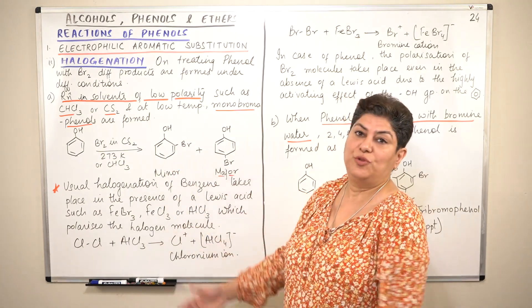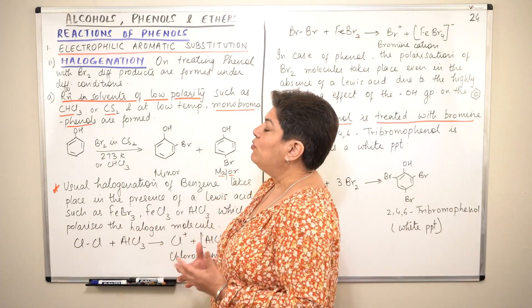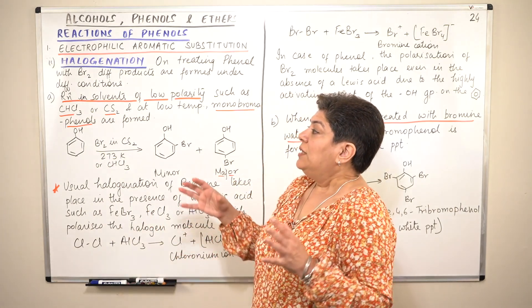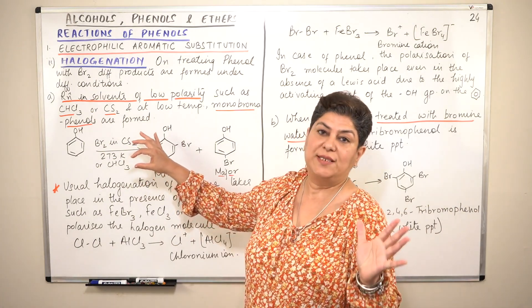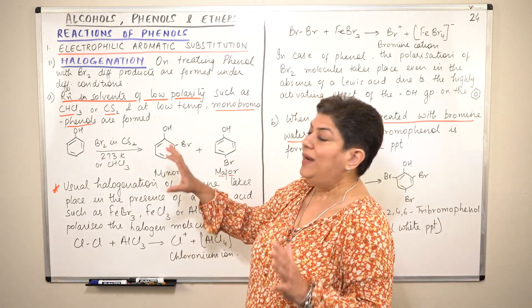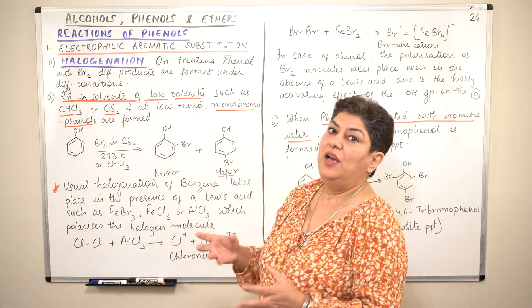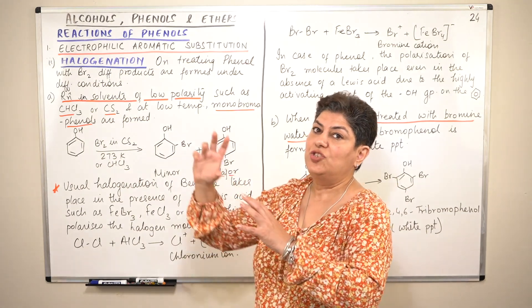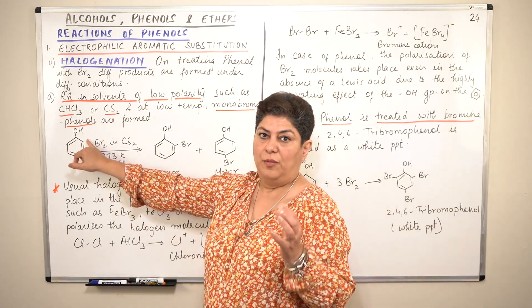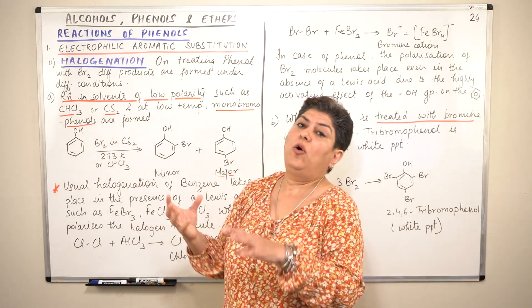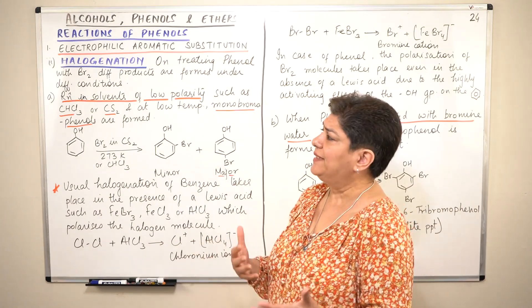Now let us move to halogenation. In this, I will not be explaining each and every step — we will be moving faster. So what are halogens? Fluorine, chlorine, bromine, iodine, astatine are the halogens. When halogenation of phenol takes place, again depending on the conditions of the reaction, you may get a mono-substituted product — a single halogen atom added — or multiple, depending on the conditions, just like nitration.